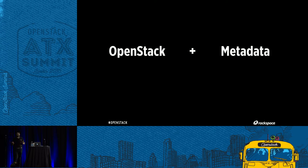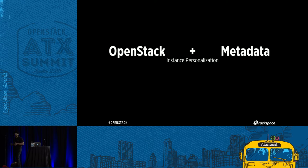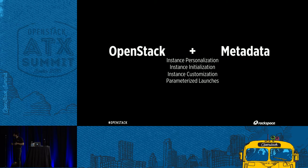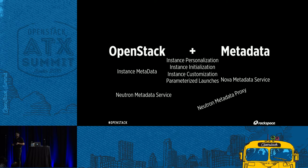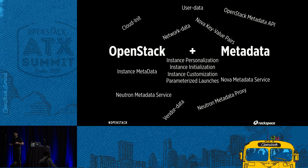OpenStack and metadata — what are we talking about? There's a lot of metadata stuff in OpenStack: Glance metadata API, Cinder LVM metadata. But what we're really talking about here is instance personalization, instance initialization, instance customization, parameterized launches, Nova metadata service, Neutron metadata proxy, OpenStack metadata API, user data, network data, vendor data, cloud-init, Nova key-value pairs, EC2 init, and cloud config.